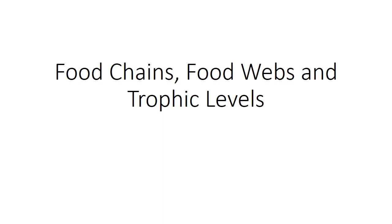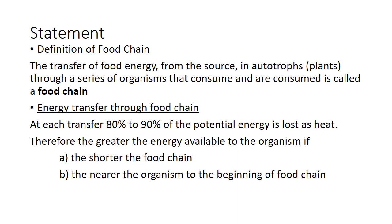Food chains, food webs and trophic levels. The definition of the food chain is the transfer of food energy from the source in the autotroph plants through a series of organisms that consume and are consumed. Autotroph means self and troph means nourishment. They are at the first trophic level and are generally consumed; those organisms are called primary consumers. The primary consumers are then consumed by the secondary consumers and so on. This is what we call a food chain.